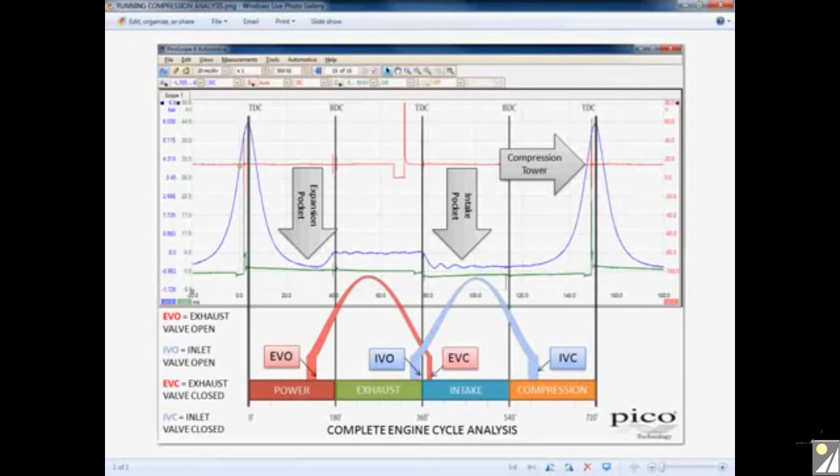Now if when you come to carry out the test you end up with a lower amount of depression, that is a slightly higher pressure, this could be that one of our valves, the inlet or the exhaust valve, or maybe even our piston rings aren't sealing properly and we've leaked out some of our air.